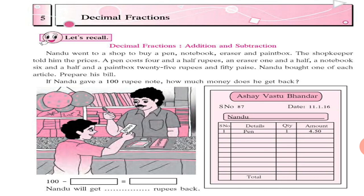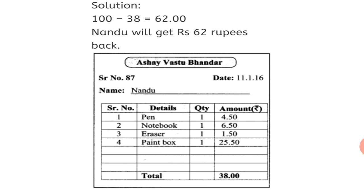First, we will have to check what his bill amounts to. So, we will have to make a total. Let's see. Pen, he bought one for rupees 4.50. Notebook, he bought for 6.50. Eraser, he bought for 1.50. And a paint box for 25 rupees and 50 paise. So, 25.50. Now, when you add it up, you get your total as 38 rupees, 38.00.